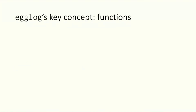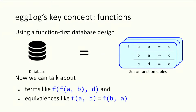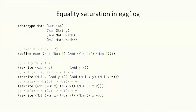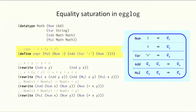One of the key concepts in egglog is functions. Every table represents a function, and a relation is just a function to the unit type. With functions, we can talk about terms and equivalencies between these terms. We can define data types with constructors in egglog, where each constructor corresponds to a table that represents a function to that data type. We can also define expressions and rewrite rules. The first two rules define commutativity and distributivity, and the last two define constant folding over addition and multiplication.